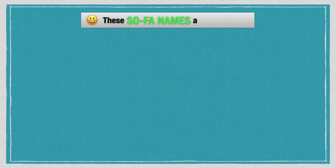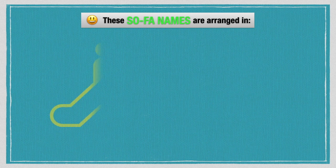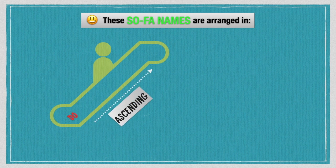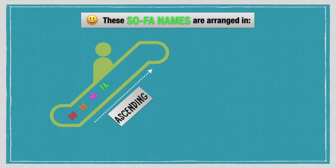These sofa names are arranged in ascending order do, re, mi, fa, sol, la, ti, and do.